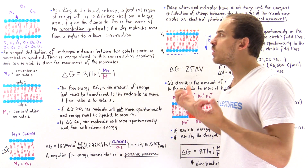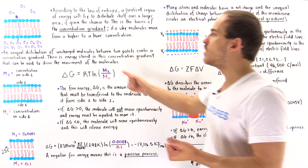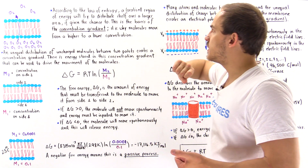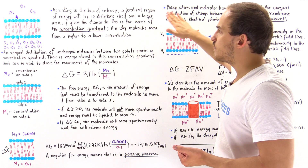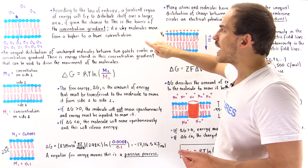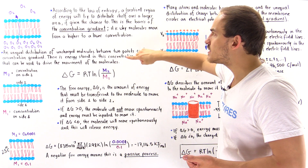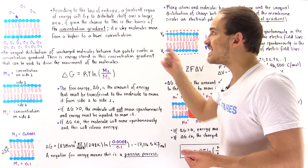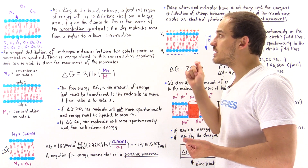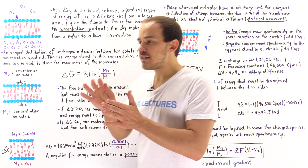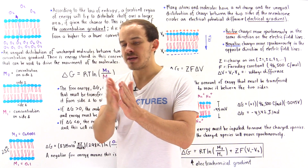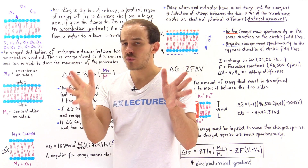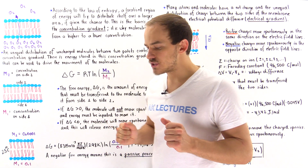So this is what the law of entropy tells us. A localized region of energy will try to distribute itself over a larger region of space if given the chance to — that is, if we actually remove that barrier between the two boxes.